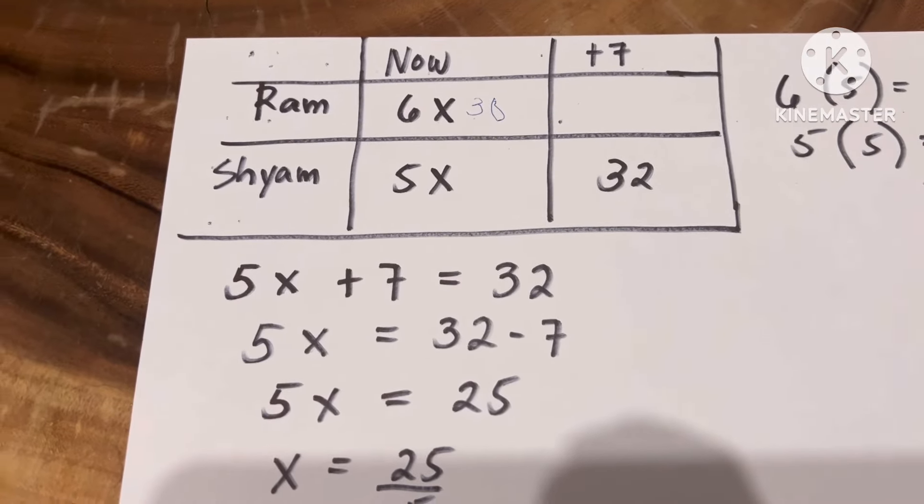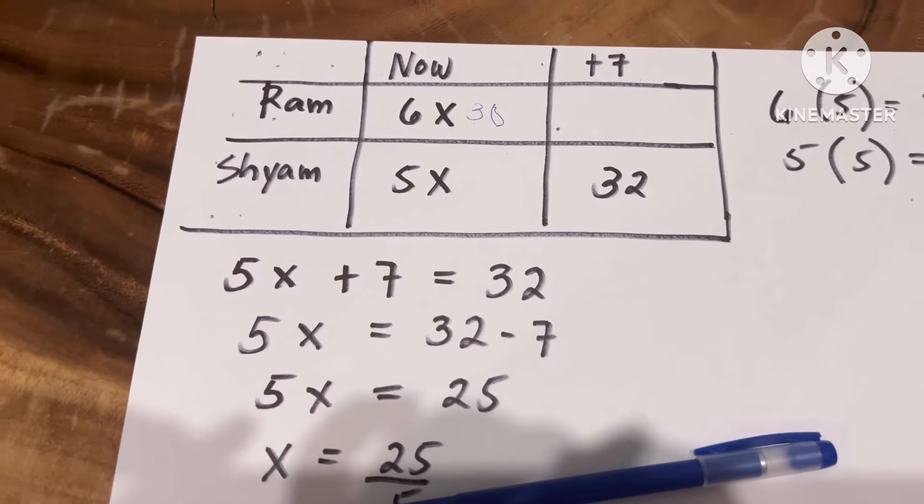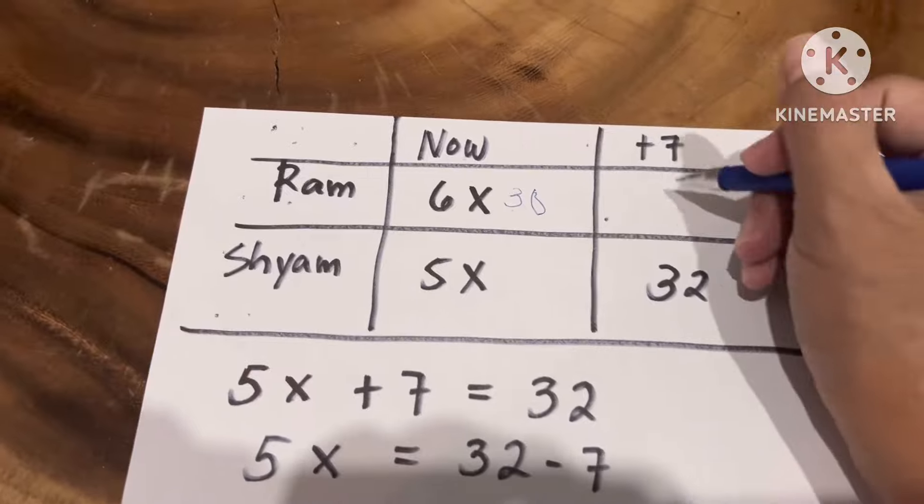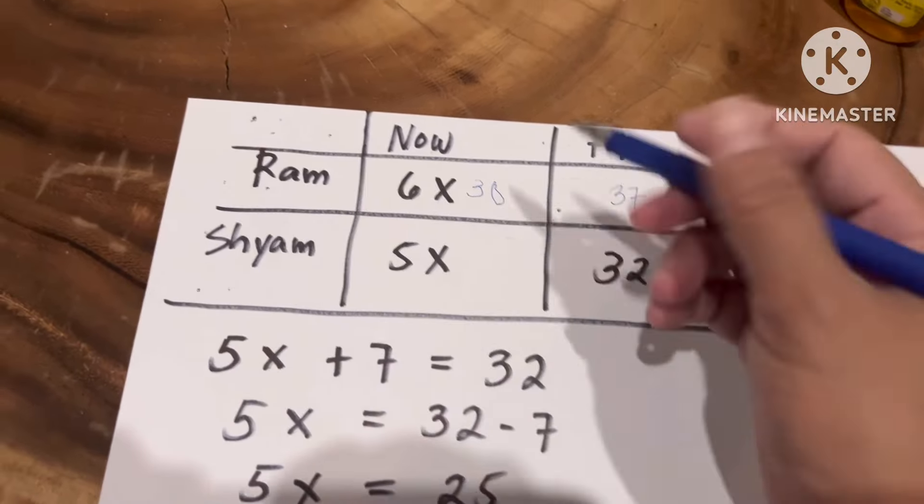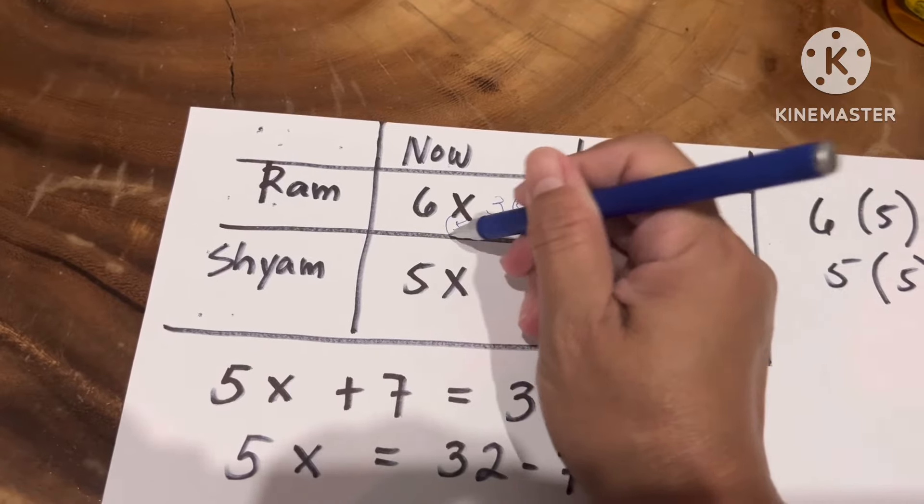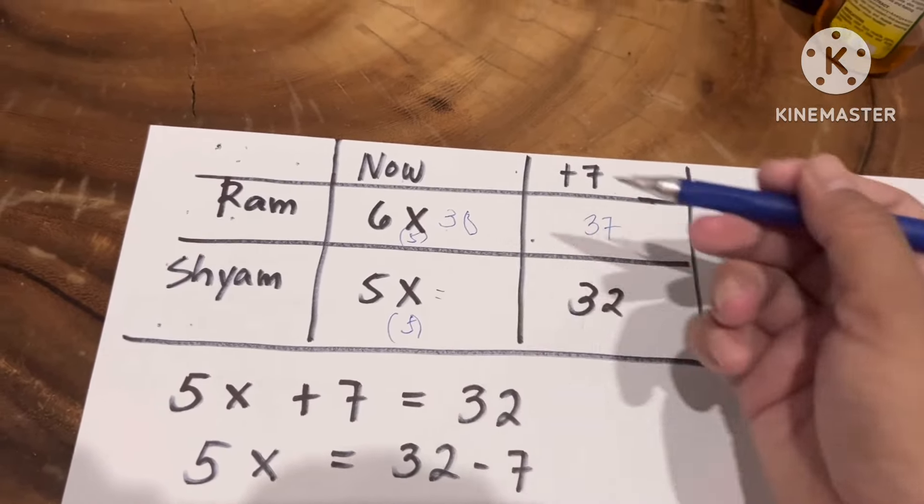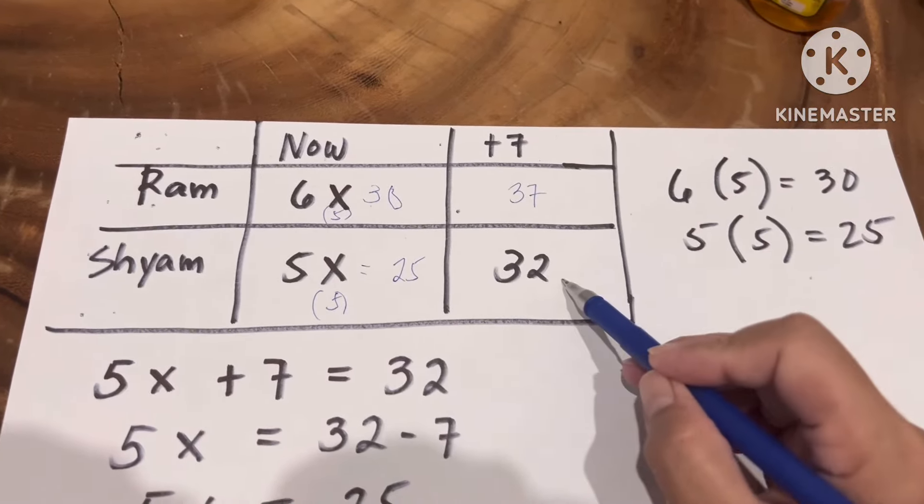And then after 7 years, of course, it will become 37 because we're going to add 7. And this one, if we substitute 5 here, 5 times 5 is 25 plus 7, that will give you 32.